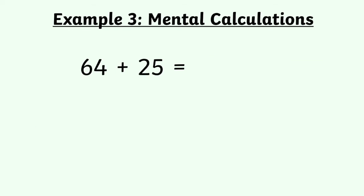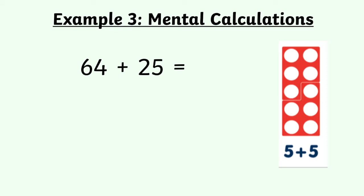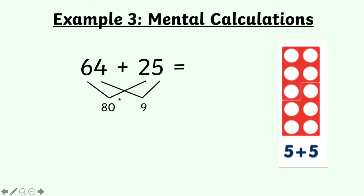Let's have a look at another example: 64 add 25. You might be thinking you can't spot a number bond to 10 there, but let's see whether we could use the 5 add 5 number bond to help. 4 add 5 is very close to 5 add 5 — we've got 4 in the ones and 5 in the ones. If it were 5 add 5 it would be 10, but 4 is 1 less than 5, so 4 add 5 makes 9. Then 6 tens add 2 tens makes 80, so our answer is 89. Knowing your 5 add 5 number bond gave you a way to work that out quickly rather than having to count on or write anything down.